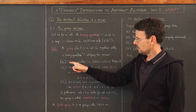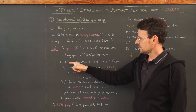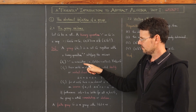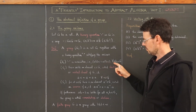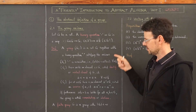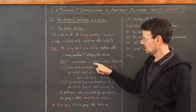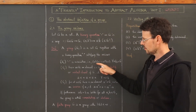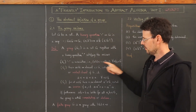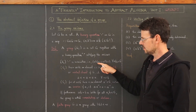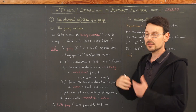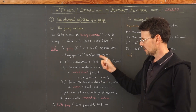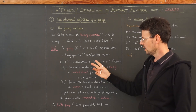First, we want this operation to be associative, meaning that for all elements a, b, c of the set G, (a·b)·c = a·(b·c). So it doesn't matter where the parentheses are; we can drop them altogether and simply write a·b·c.